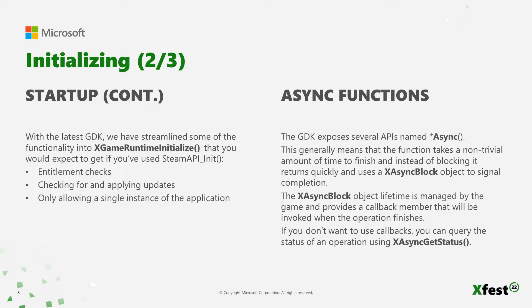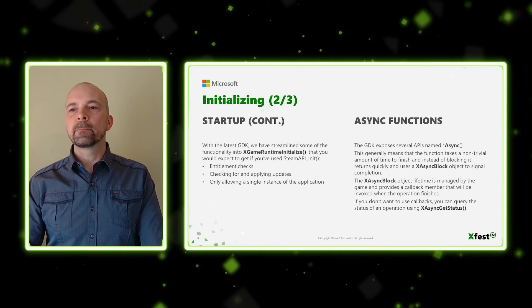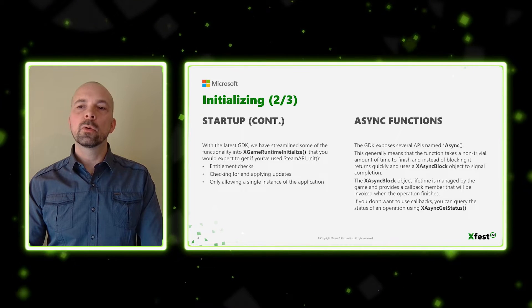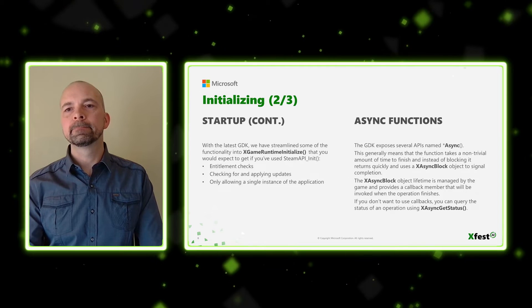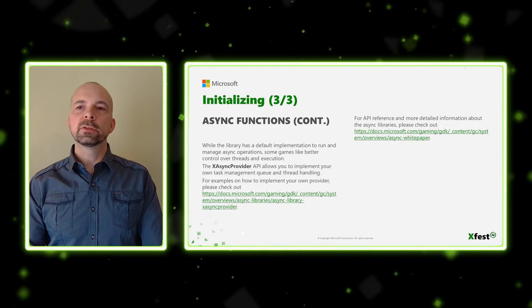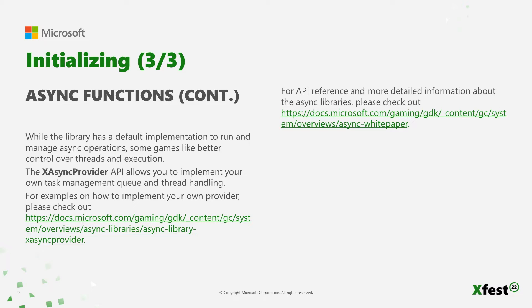But first, let's talk about async methods. Several API functions have the async postfix. This means that the operation performed by the function will take a non-trivial amount of time to complete. These functions use an application-managed object called async block. The async block has a callback method, but you can also use xasync get status to poll or wait for the result. While the async library provides a default task management implementation using thread pools, you can override that implementation using the xasync provider to tie in with your own system.